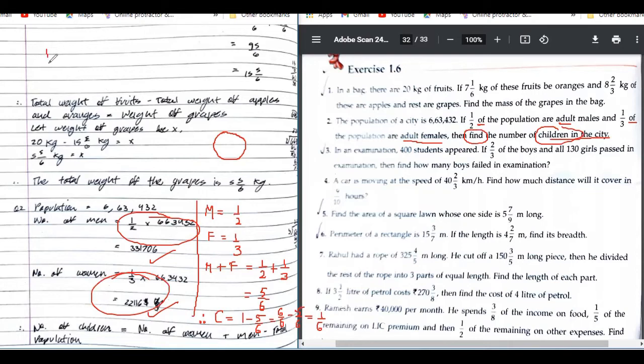So answer would be 1/6 of... 'of' means what? Very good, multiplication. The population is 663,432. Do this calculation and tell me the answer quickly.